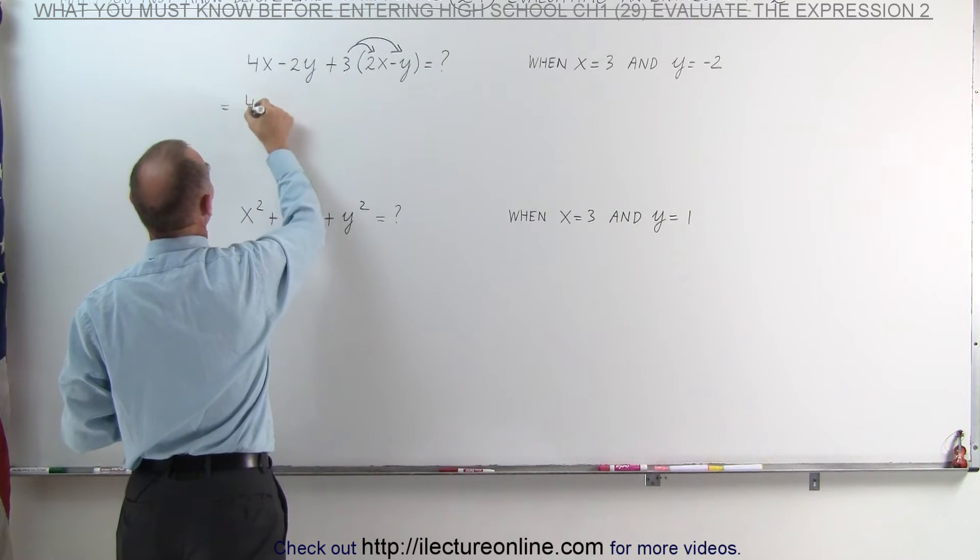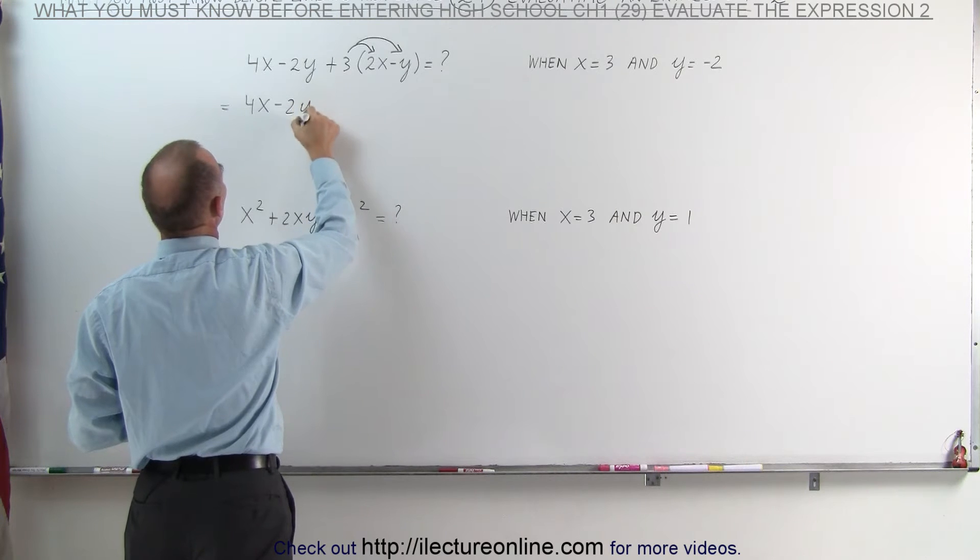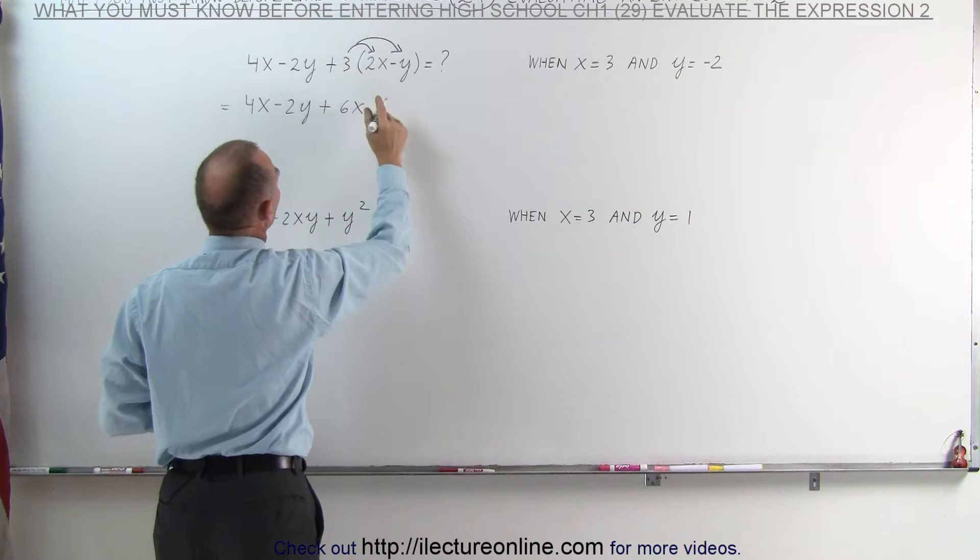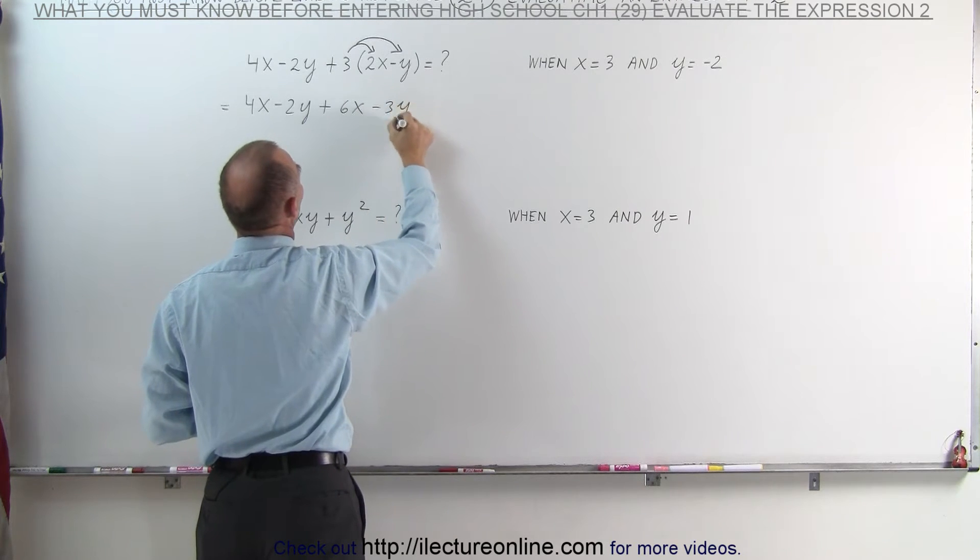This then becomes 4x minus 2y plus 3 times 2x, which is plus 6x, and plus 3 times a negative y, which is minus 3y.